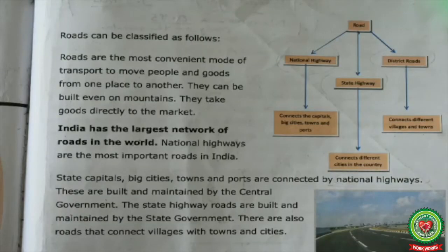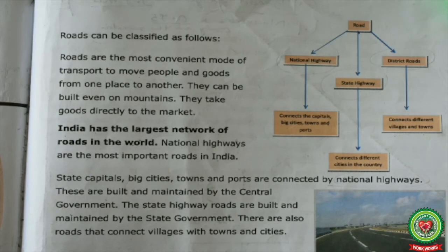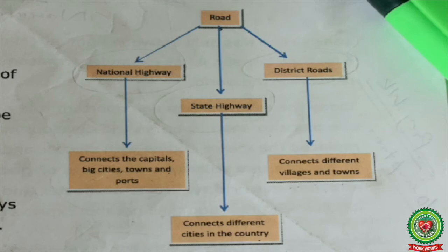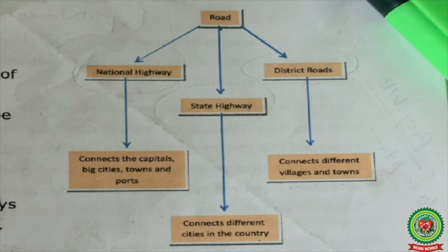State capitals, big cities, towns, and ports are connected by national highways, which are built and maintained by the central government. State highway roads are built and maintained by the state government. There are also roads that connect villages with towns and cities. Roads are thus classified into three categories: national highways, state highways, and district roads — all discussed at the beginning of today's class.